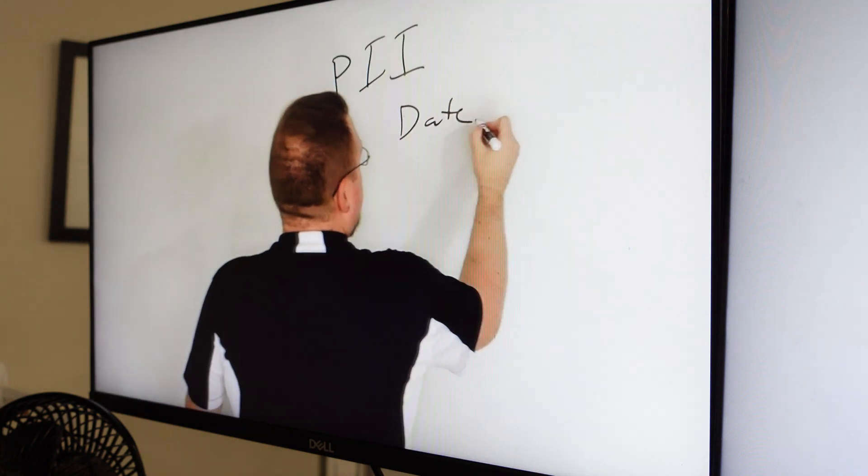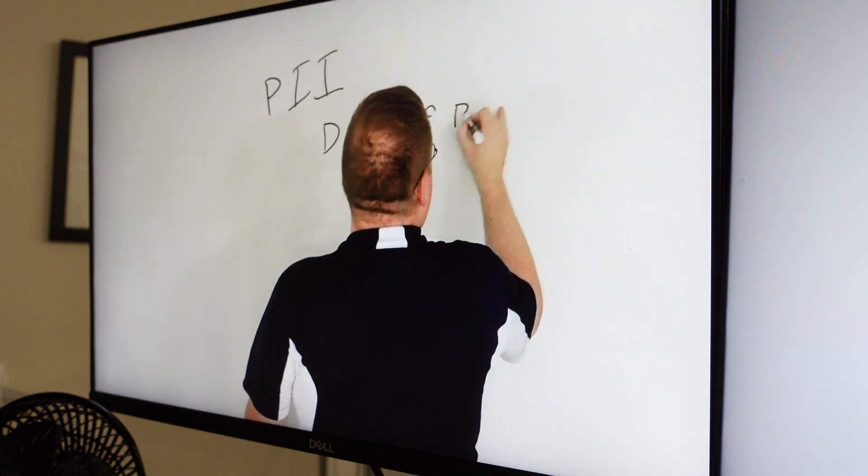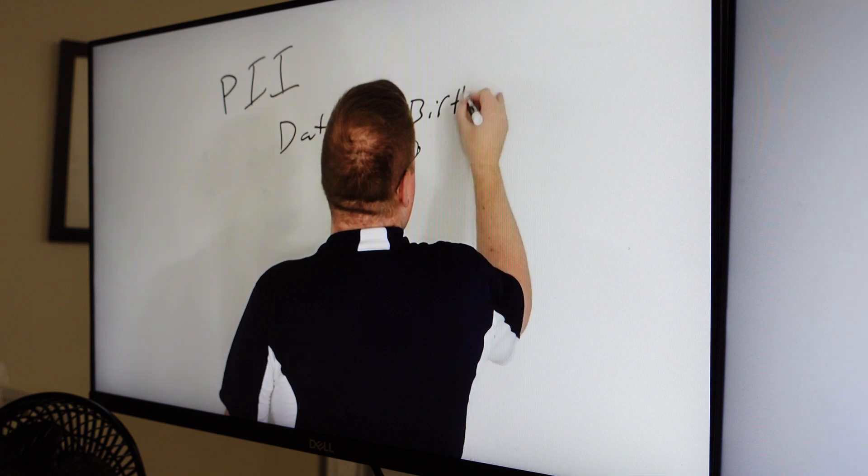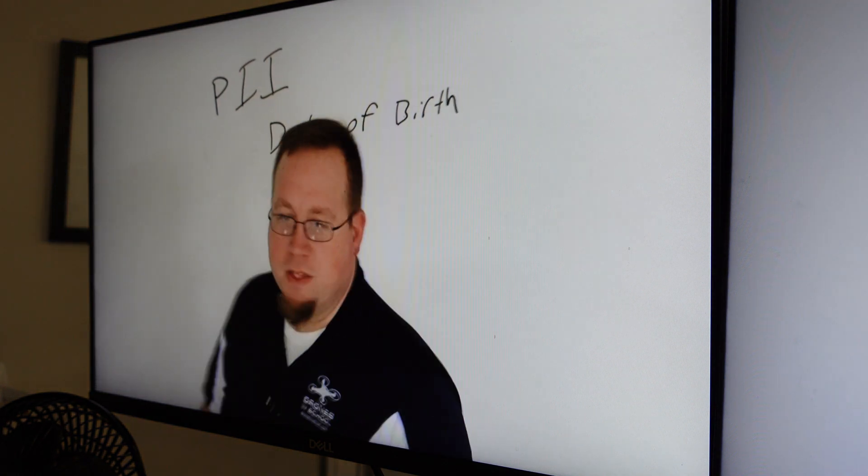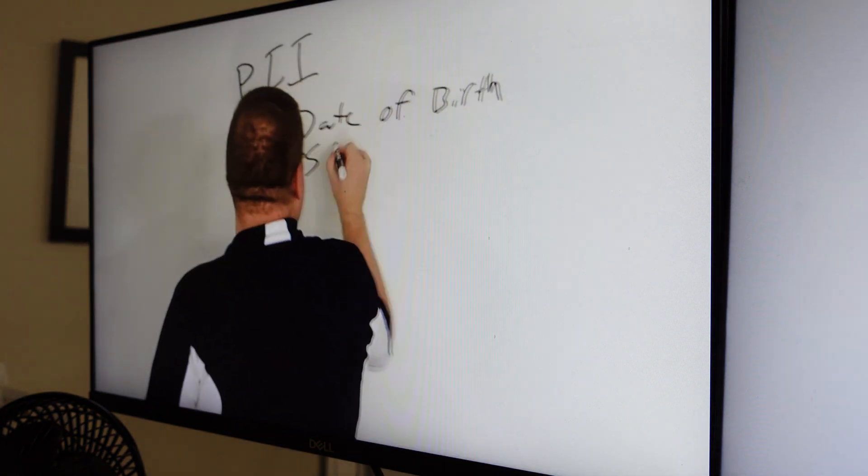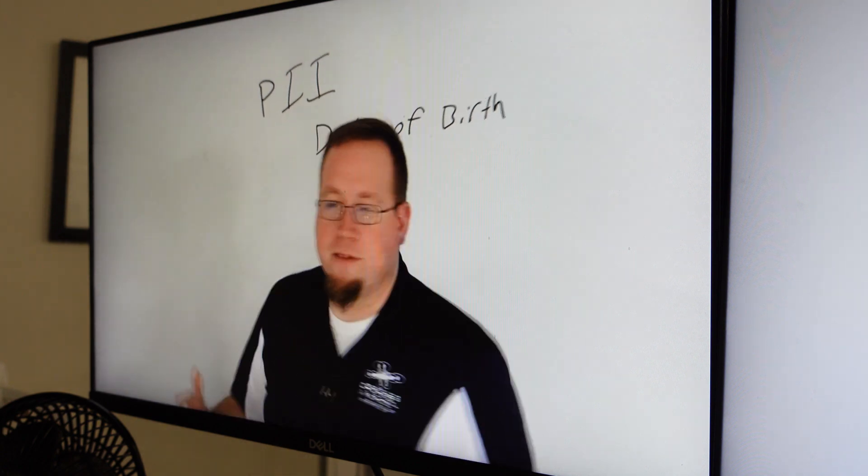Somebody says date of birth. Okay, well, date of birth could be something. Your social security number, SSN. All this kind of stuff is our PII.